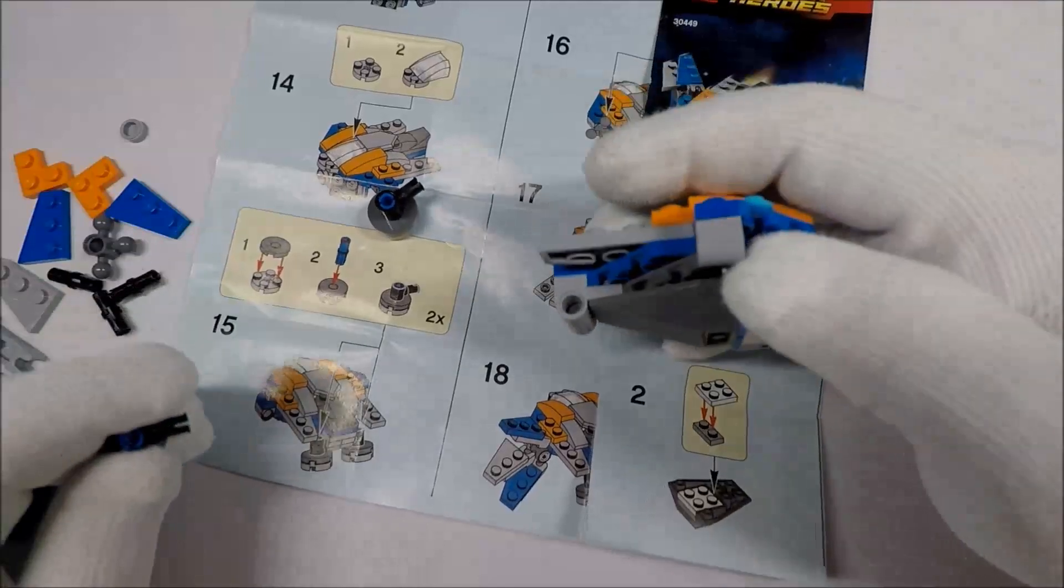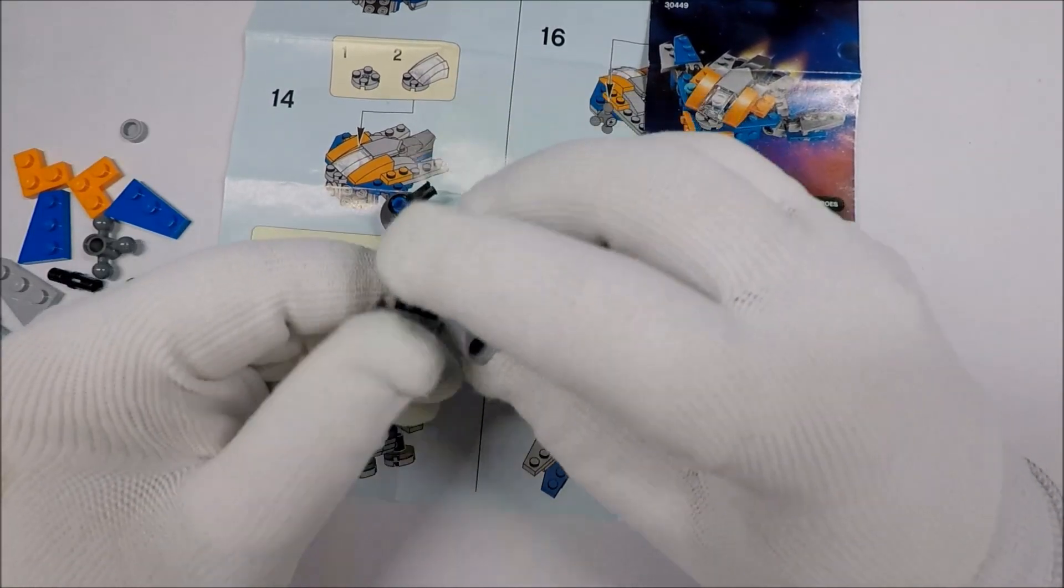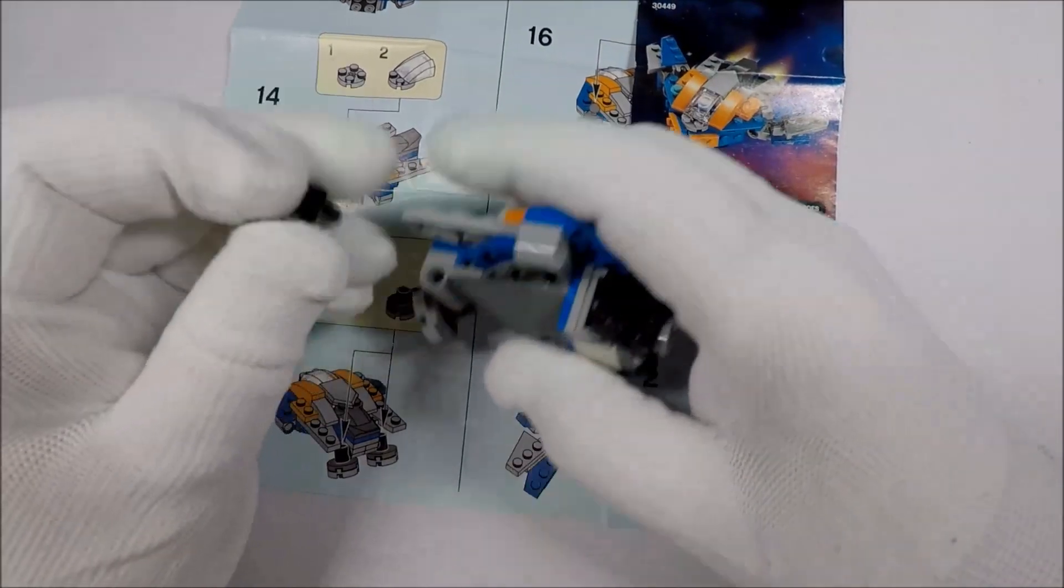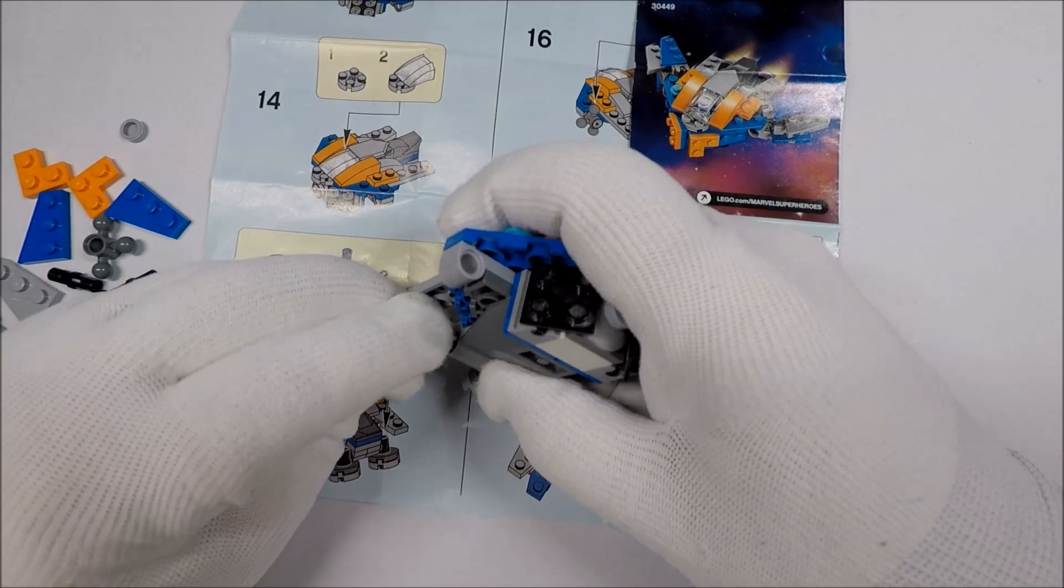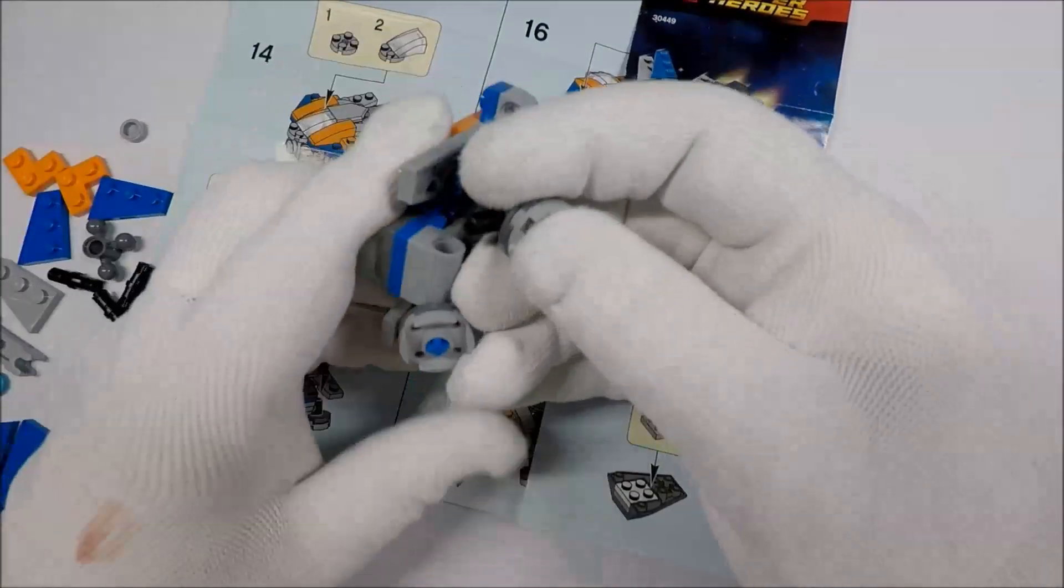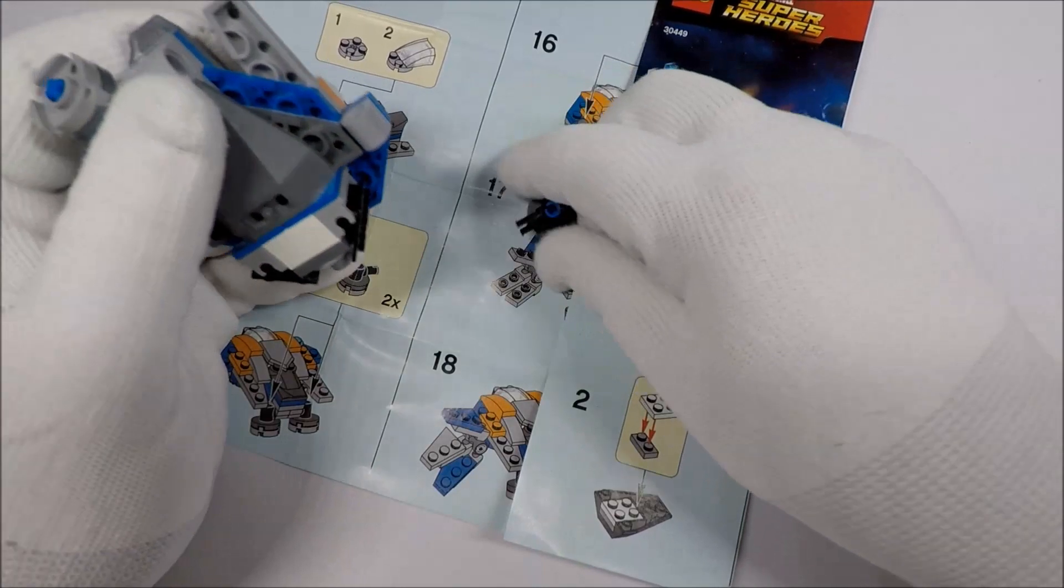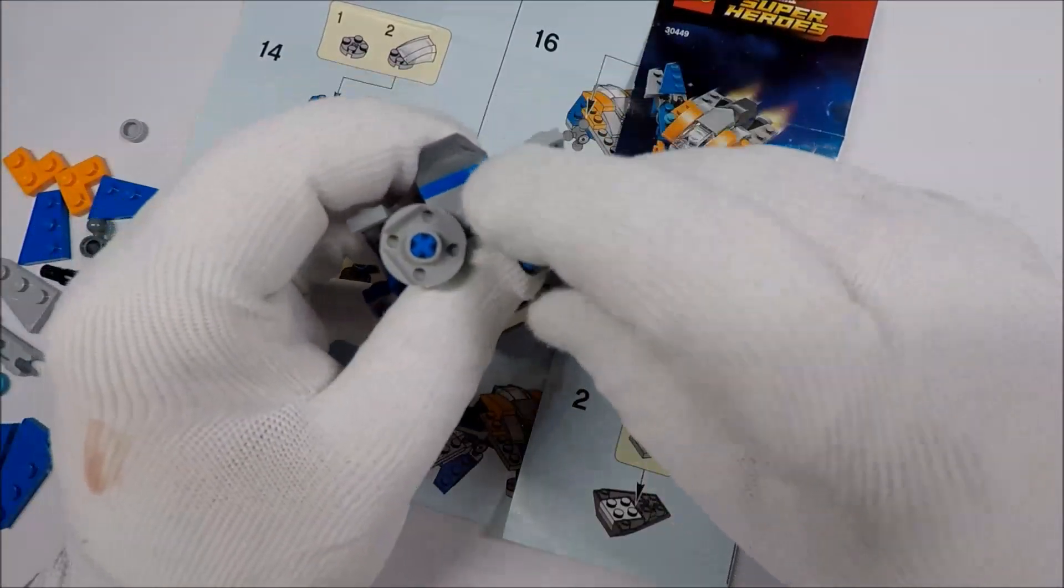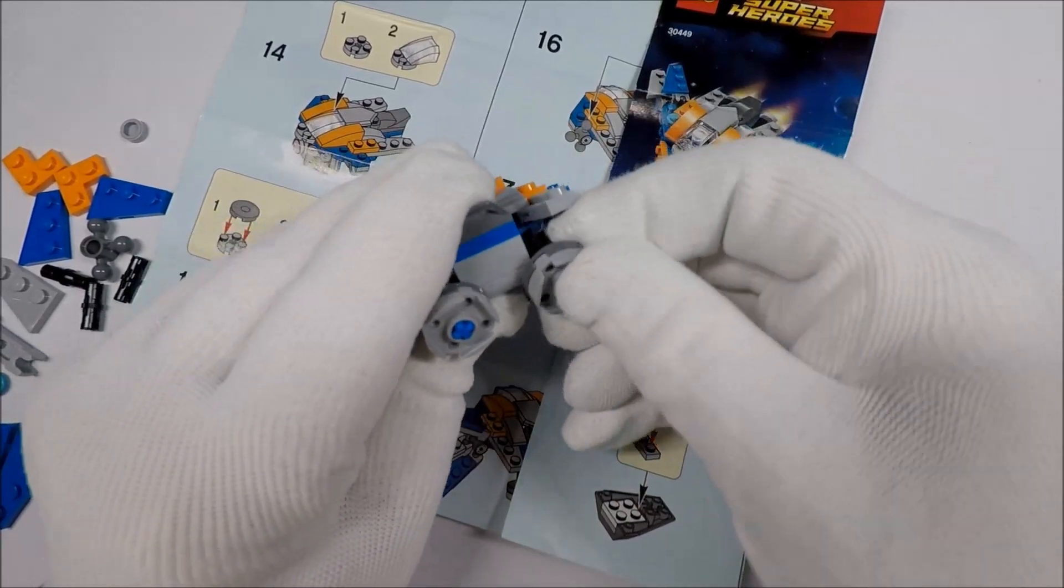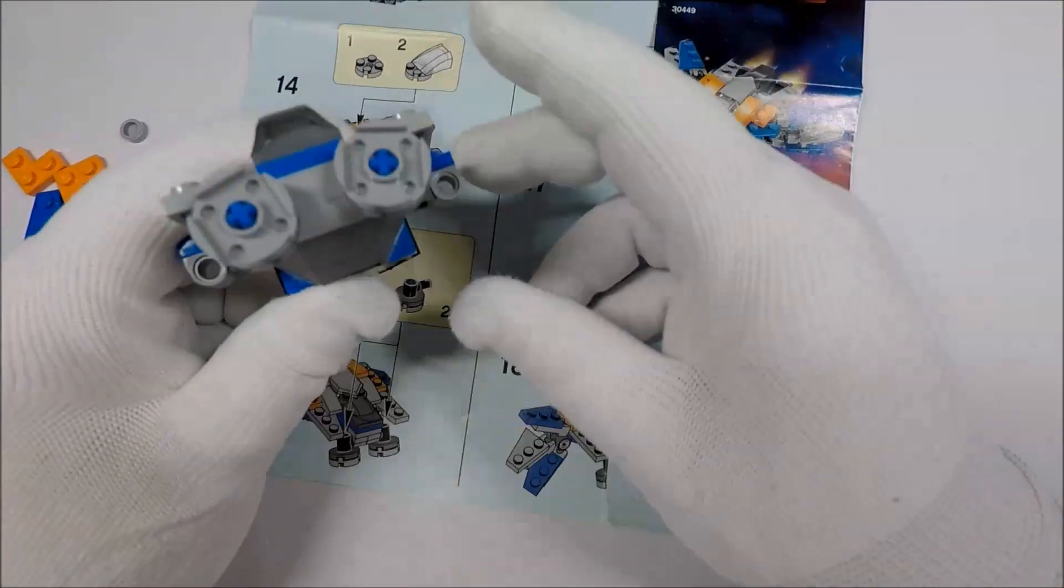And then these attach to the back so these are like the thrusters. Maybe these are the thrusters. Someone doesn't want to clip in. These things are being extra stubborn today. Hold on a minute, get a good grip on this thing. Wow it really doesn't want to go in does it. There we go. So we got that taken care of and I'm guessing yeah it's going to be facing backward like that.